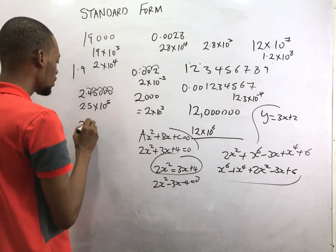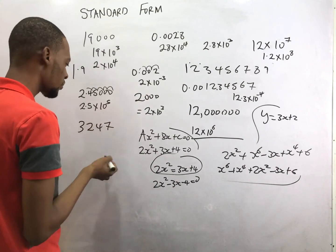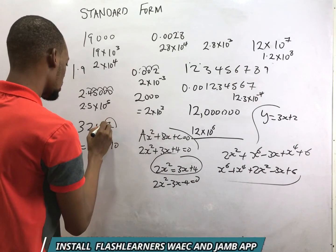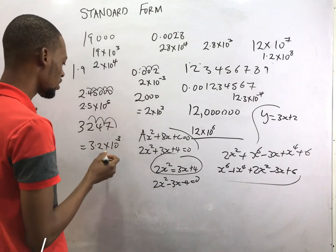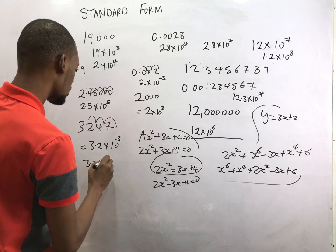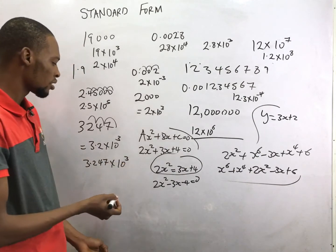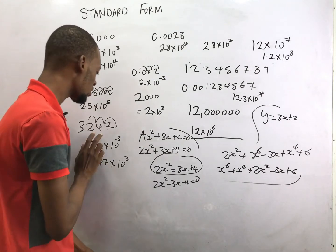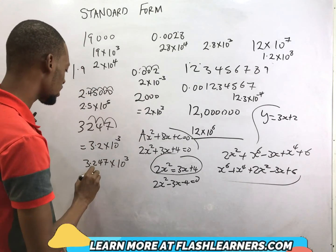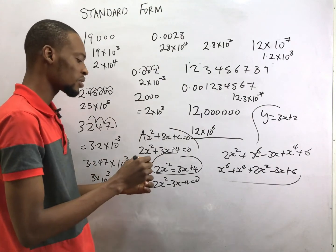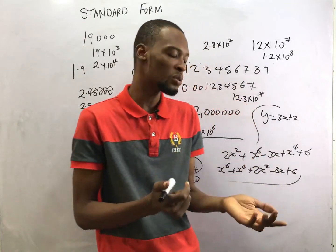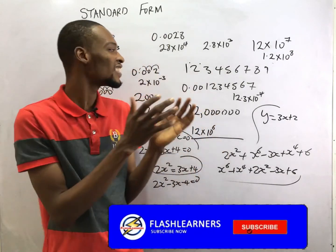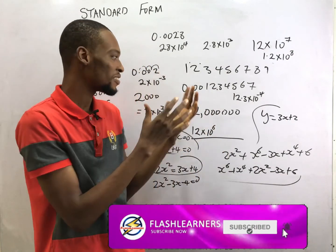Still on standard form: if I give you 3247, this is the same as 3.2 times 10 to the power of 3, or more precisely 3.247 times 10 to the power of 3. It depends on how many decimal places you want and how you are approximating. If you want just a single digit, you can write this as 3 times 10 to the power of 3. That's how standard form works in mathematics. Thanks for watching — don't forget to check out my other mathematics videos and subscribe to this channel.